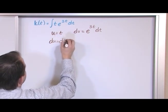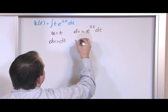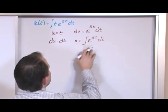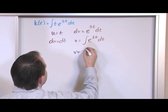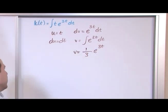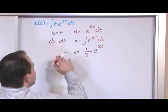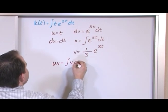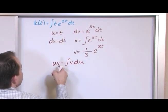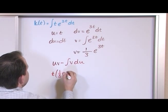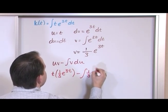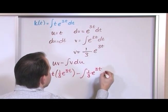So: k(t) equals the integral of t·e^(3t) dt. We let u equal t, and dv equal e^(3t) dt. Then du equals dt. To find v, we integrate e^(3t) dt: v equals (1/3)·e^(3t), since 1 over the derivative of the exponent is 1/3. Then we plug into the integration by parts formula: u·v minus the integral of v·du.